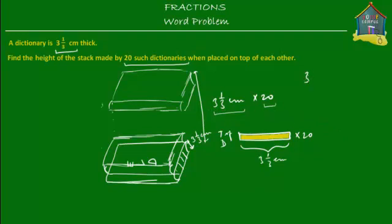So let's find out what 3 and 1/3 centimeters times 20 is equal to. What you have here is a mixed number, or mixed fraction, that you have to multiply by a whole number. 3 and 1/3 is a mixed number and 20 is a whole number. There are two ways of multiplying this mixed fraction by this whole number. One of them is to split this mixed fraction into its whole number part and the fractional part, and then multiply each of them by 20, and then add the two products.